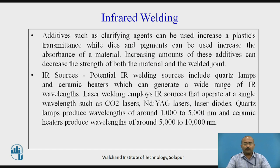Potential IR welding sources include quartz lamps and ceramic heaters, which can generate a wide range of IR wavelengths. Laser welding employs IR sources that operate at a single wavelength such as CO2 lasers, Nd:YAG lasers, and laser diodes. Quartz lamps produce wavelengths of around 1,000 to 5,000 nanometers, and ceramic heaters produce wavelengths of around 5,000 to 10,000 nanometers.